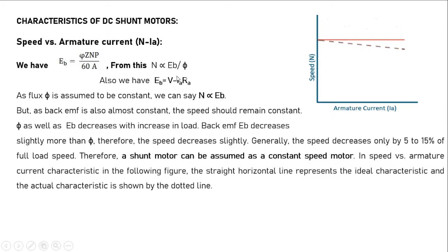When load increases, armature current Ia increases, causing Eb to decrease, and so speed decreases. But simultaneously, flux also decreases due to armature reaction, which tends to increase the speed. The changes in flux and back EMF mutually compensate, keeping speed almost constant. Generally, speed decreases only by 5 to 15% of full load speed, so shunt motor is called a constant speed motor.